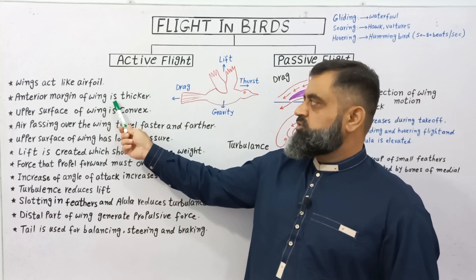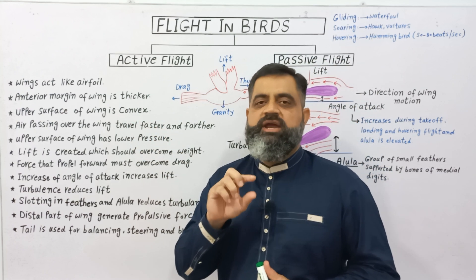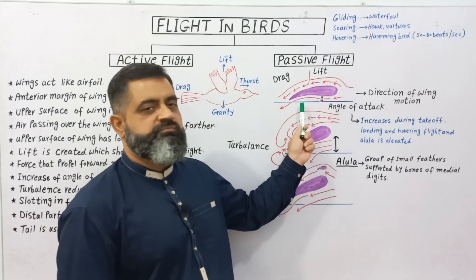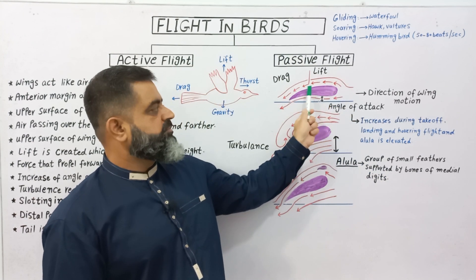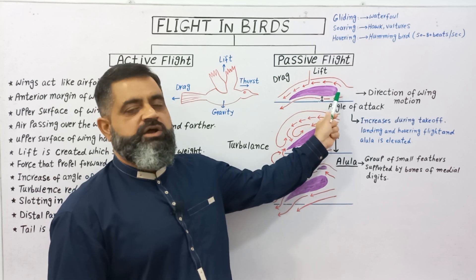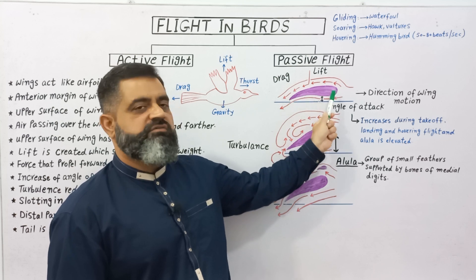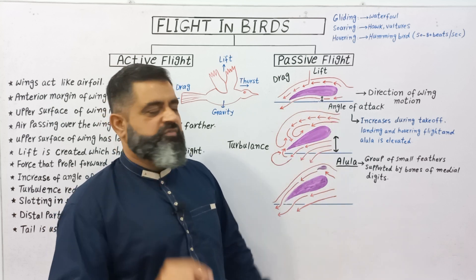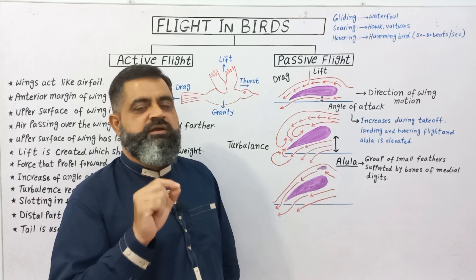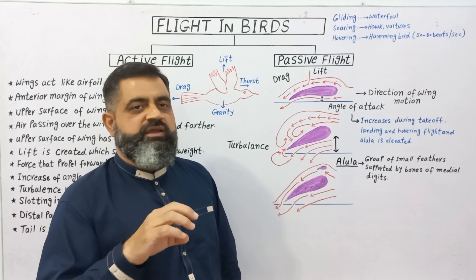Next point: the anterior margin of the wing is thicker than the posterior one. If we look at the cross section of a wing — as you can see in this diagram — this purple shape represents the shape of a wing. The anterior end of the wing is always thicker, while the posterior margin of the wing is thinner. This shape helps the bird to fly in the air.